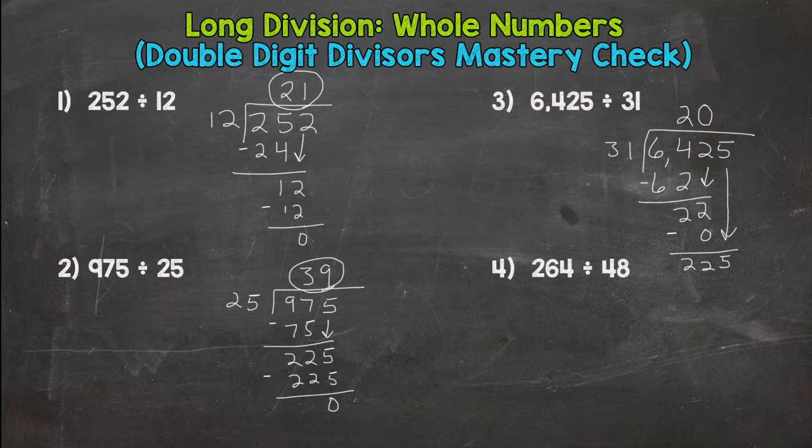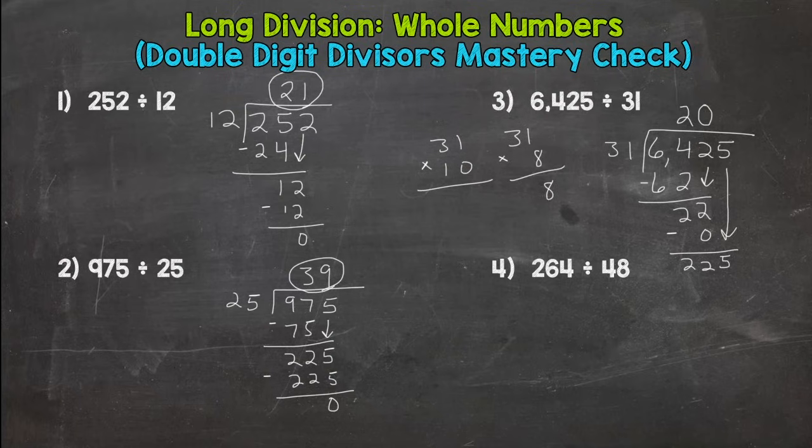So I get 225 divided by 31. Now you probably don't know your 31 facts, so you might need to estimate or you should have estimated and checked. So I know 31 times 10 is 310, so I need to scale it back a little bit. Let's try eight. We get eight, 248, a little too high. Oops, I forgot to put 310 there. So let's try seven.